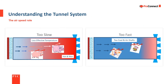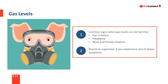The air speed entering the barn and flowing over the pigs is important for pig comfort. If the air speed is too low, there will be too much rise in temperature and humidity from the inlet to the fans. When the air speed is too high, it can chill the pigs. Gas levels that are too high result in poor performance and can impact welfare. Eye, nose, or throat irritation or a headache may indicate that gas levels are too high and should be reported to your supervisor.